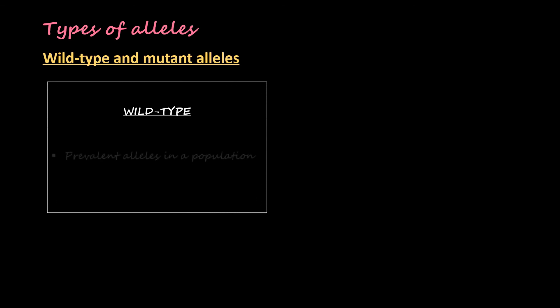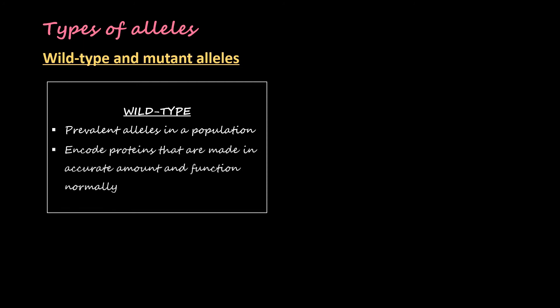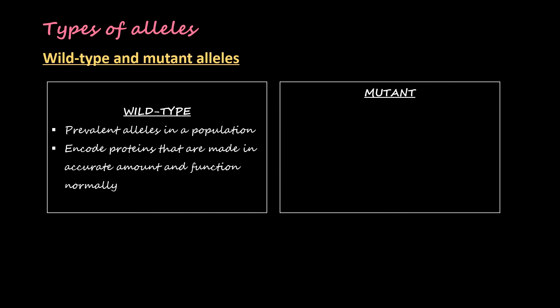There can be different types of alleles: wild type and mutant alleles. A wild type allele is the one which is prevalent in a population — they encode proteins that are made in accurate amounts and function normally. For example, in a population of birds whose beak color is red, all the birds will have a red colored beak, provided some birds show an orange colored beak.